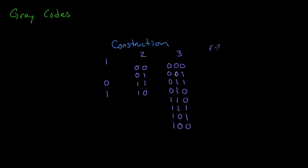This is called the reflect-and-prefix method: you reflect top to bottom, and then you prefix the top half with zeros and the bottom half with ones. So that's how you make gray codes, but I'm going to show you another way to do it.